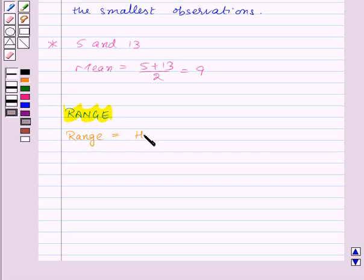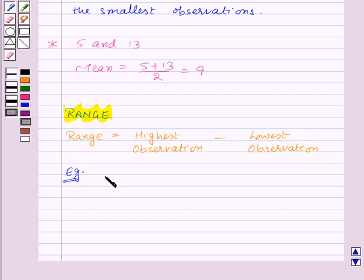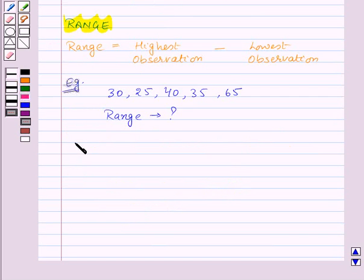Let's take an example for this. Let us take the same observations which we took in our last example, that is 30, 25, 40, 35, and 65. Here we need to find the range of these observations. So to find out range, first of all we will arrange these observations in ascending order.